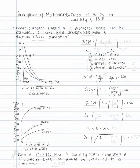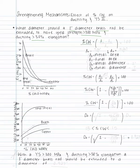The topic of this problem is strengthening mechanisms — specifically the effect of percent cold work on ductility and yield strength. What diameter should a 1 inch diameter brass rod be extruded to in order to have a yield strength greater than 300 megapascals and ductility greater than 30% elongation? This problem will be solved with the equation: percent cold work equals A-naught minus A-sub-f, divided by A-naught, multiplied by 100.